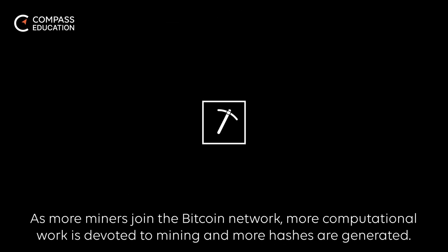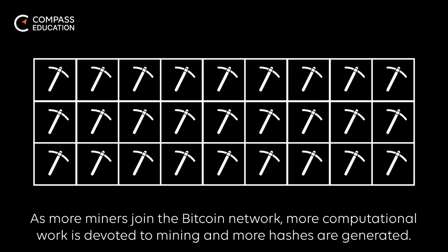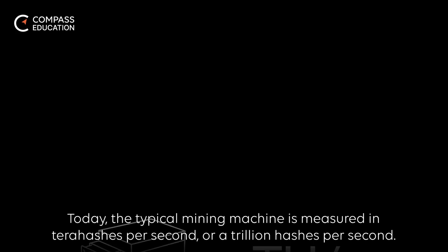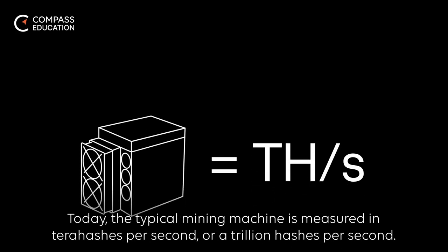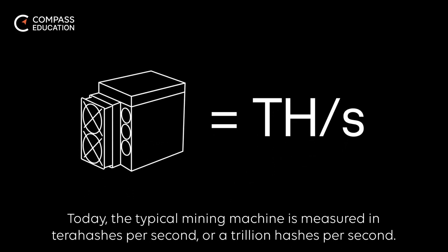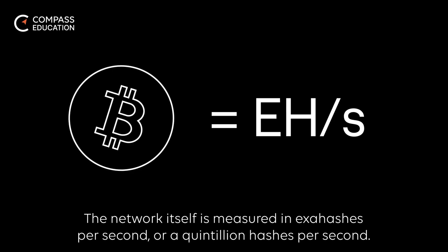As more miners join the Bitcoin network, more computational work is devoted to mining and more hashes are generated. Today, a typical mining machine is measured in terahashes per second, or a trillion hashes per second. The network itself is measured in exahashes per second, or a quintillion hashes per second.